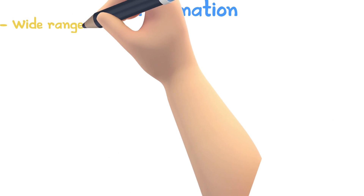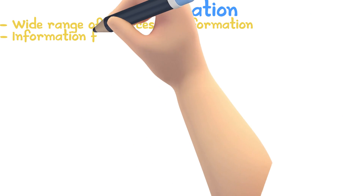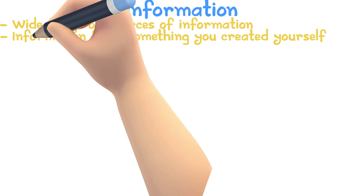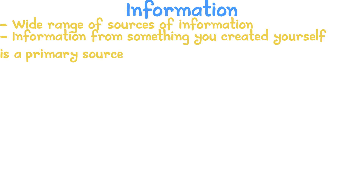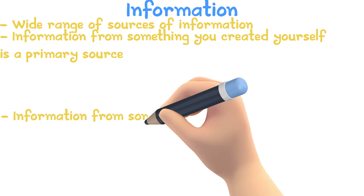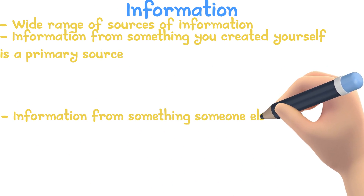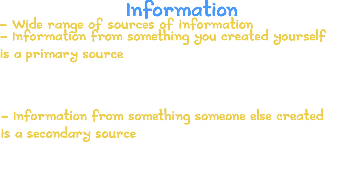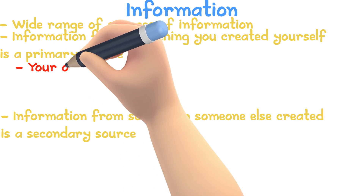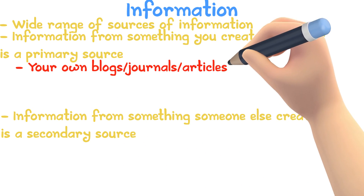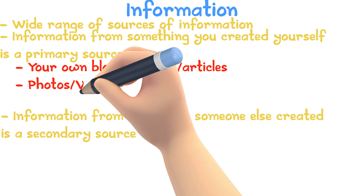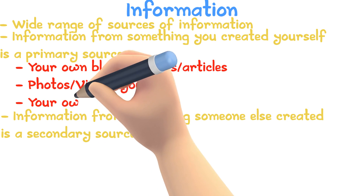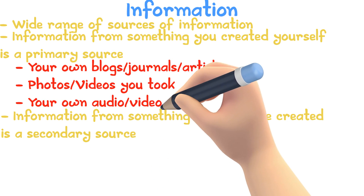Thanks to the internet, there are a wide range of sources for your information. If it is from something you created yourself, it's a primary source. Some examples for primary sources are your own journals, blogs or articles, or photos that you took yourself, or your own video or audio recordings.